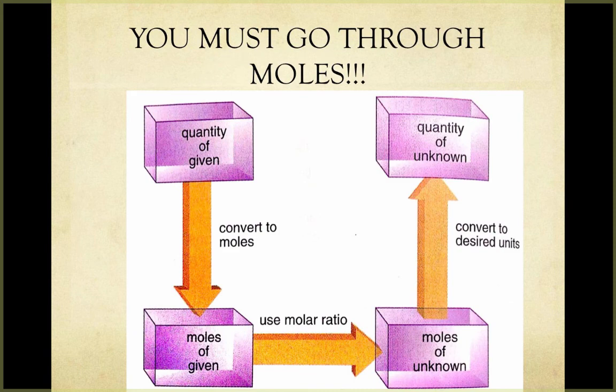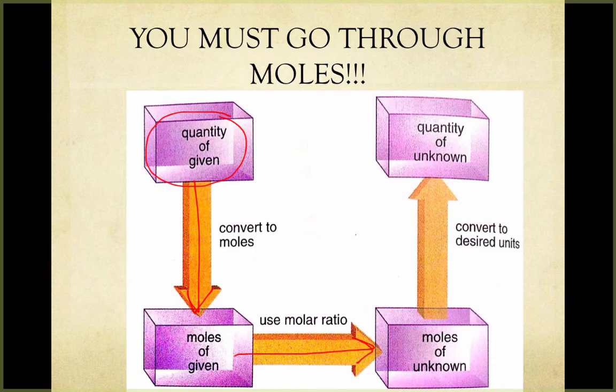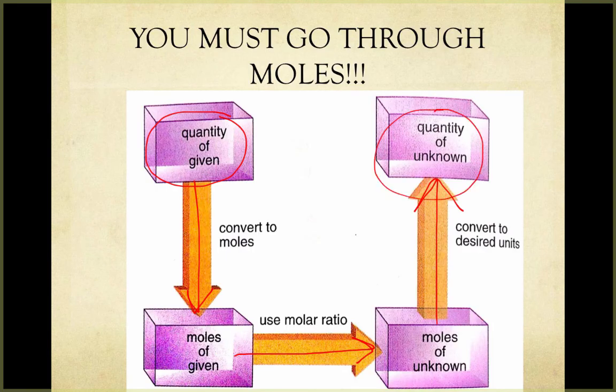So in review, we started with a mass of one quantity, either a reactant or a product, converted it to moles, used the mole ratio from the balanced equation to figure out how many moles of what we want we can get from the moles we were given, and finally converted those moles back to mass. Hence, it's a mass-to-mass problem.